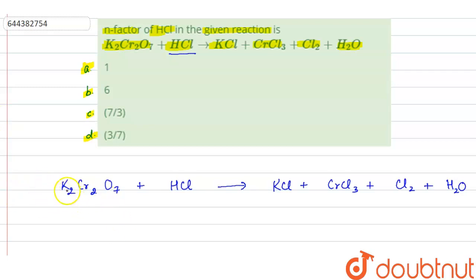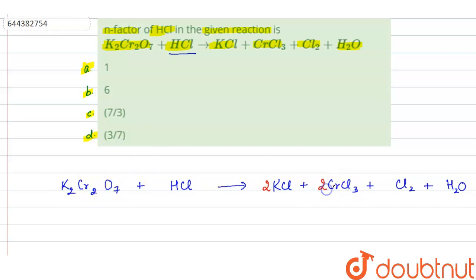On the reactant side, we have 2 potassium atoms but on the product side we have only 1. So we will write the coefficient 2 in front of KCl to equalize the potassium atoms on both sides. On the reactant side we have 2 chromium but on the product side we have only 1, so again we write 2 here.